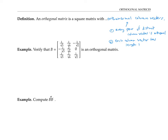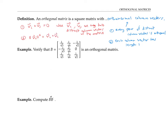We can write the orthogonality condition in terms of dot products: vi dotted with vj has to be zero, where vi and vj are any two distinct column vectors of the matrix. The second condition — that each column vector has length one — can also be written in terms of dot products, since the length of a vector squared equals the dot product of the vector with itself. So requiring length one is the same as requiring that the dot product of the vector with itself equals one.